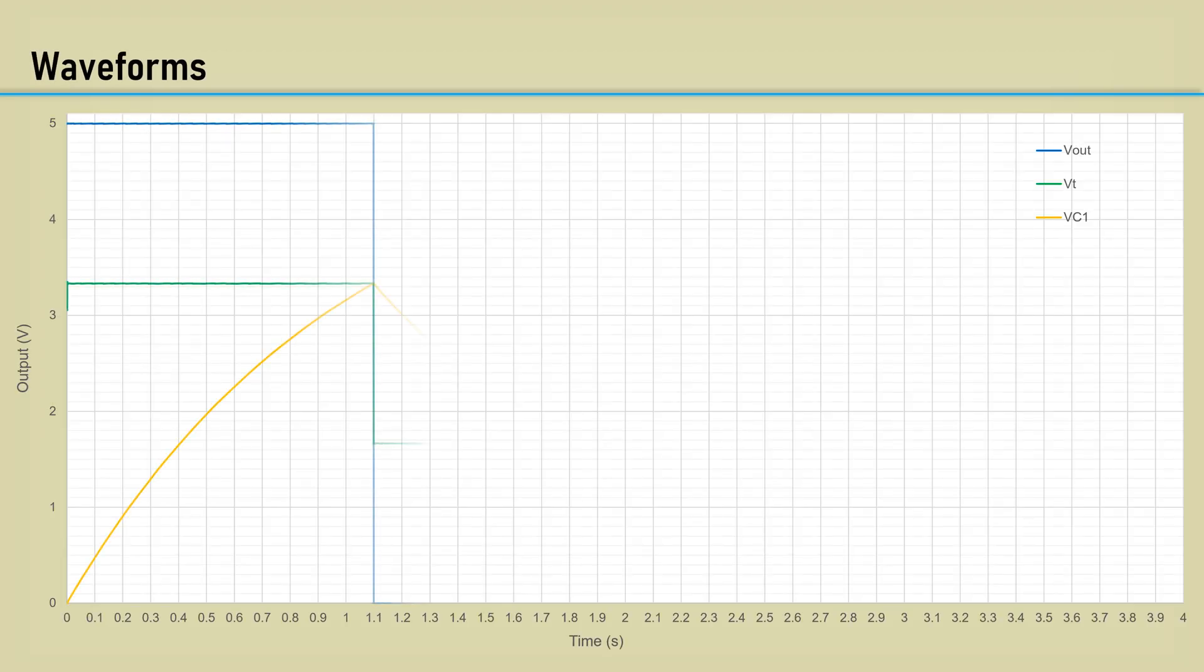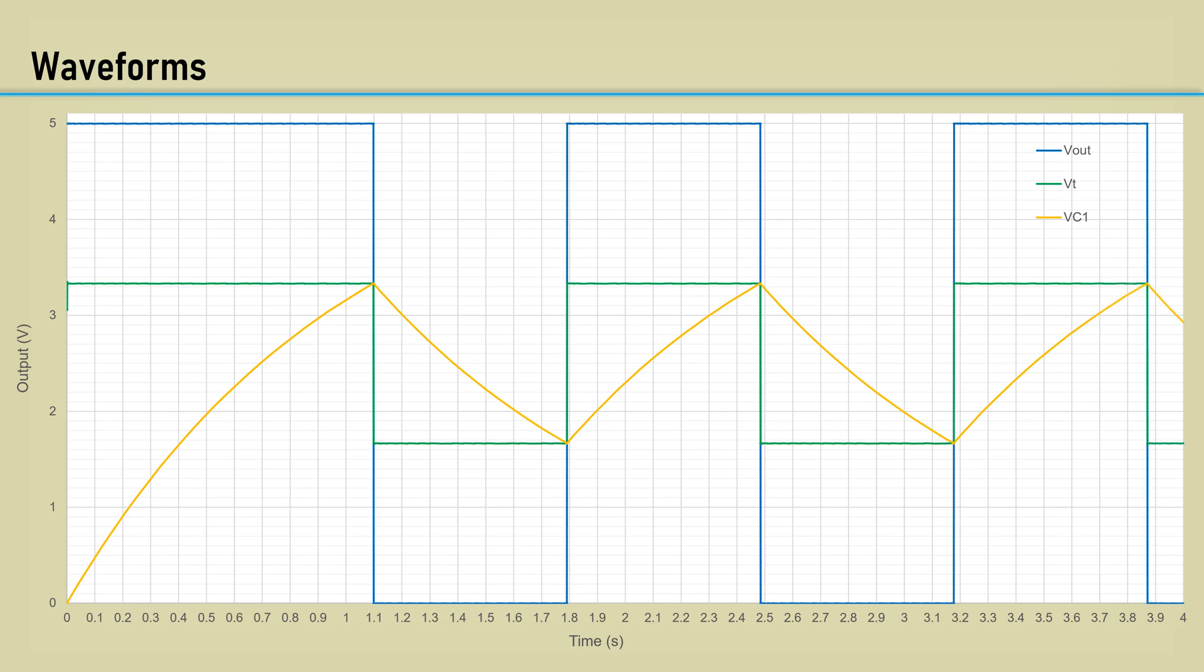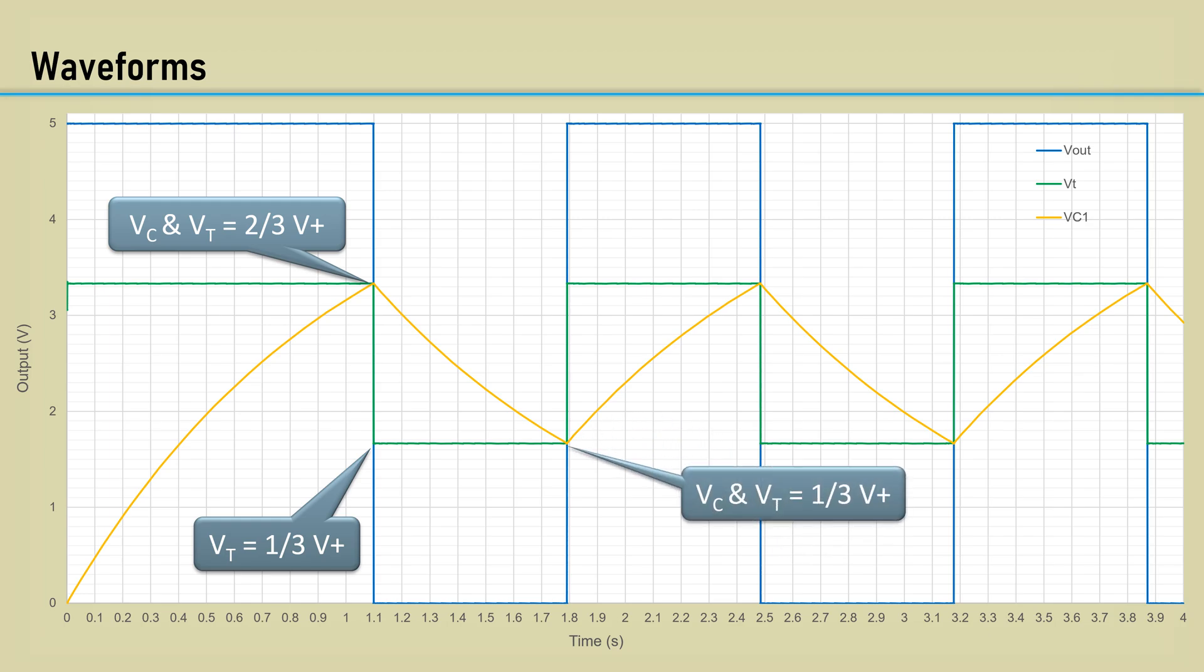Here is a chart of Vout, Vt, and Vc1, the capacitor voltage. At this point, the capacitor charges to the threshold of two-thirds V+. Then the threshold voltage switches to one-third of V+, causing C1 to discharge. At the point where the capacitor discharges to one-third V+, the output goes high, and the cycle repeats.